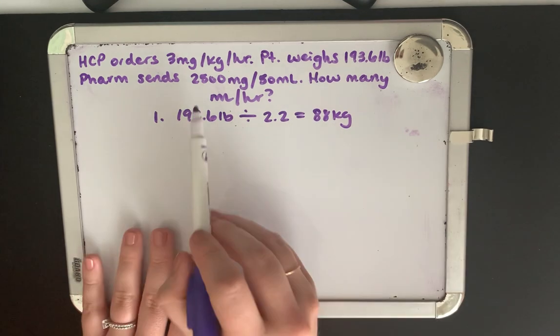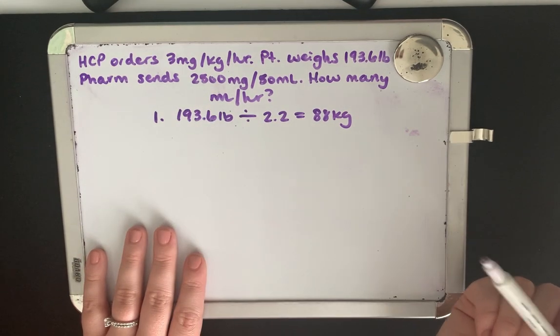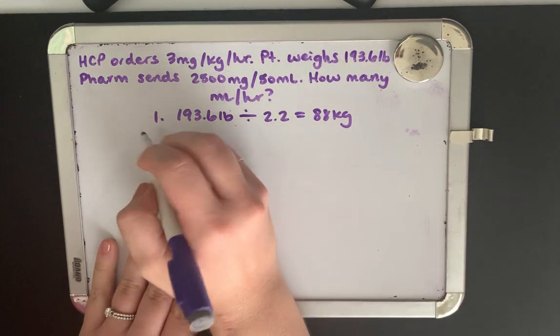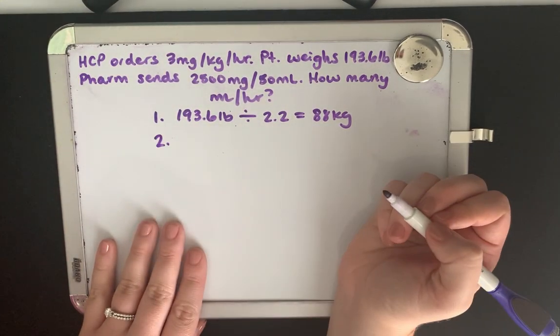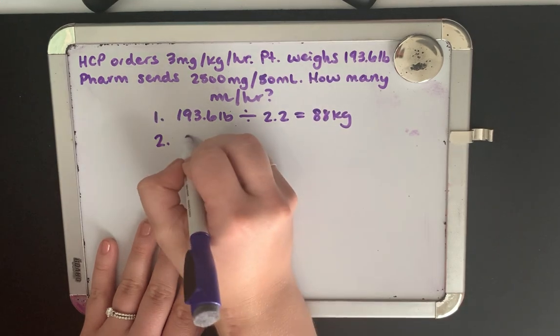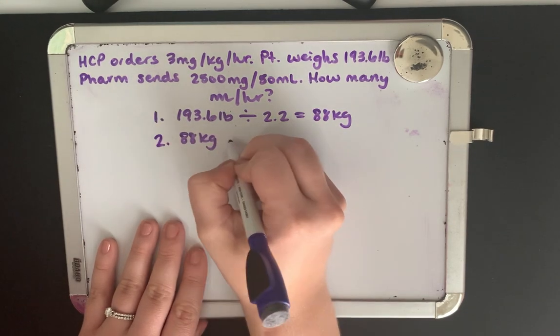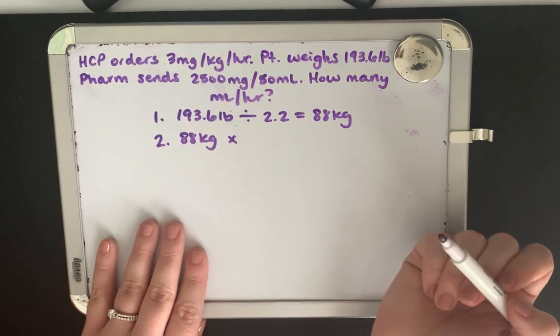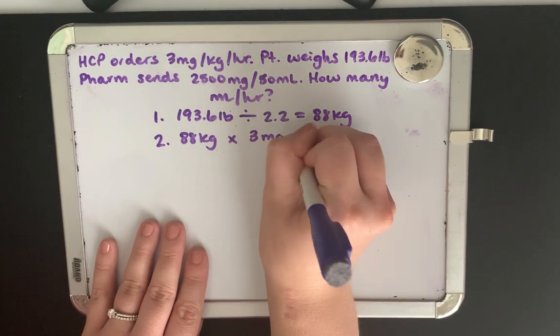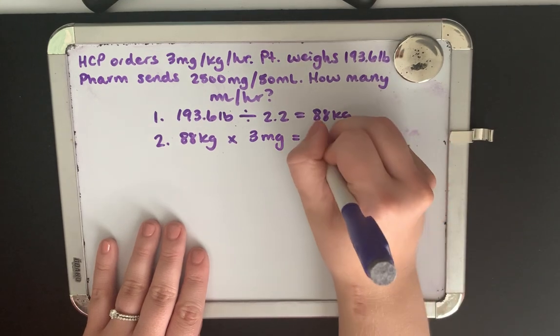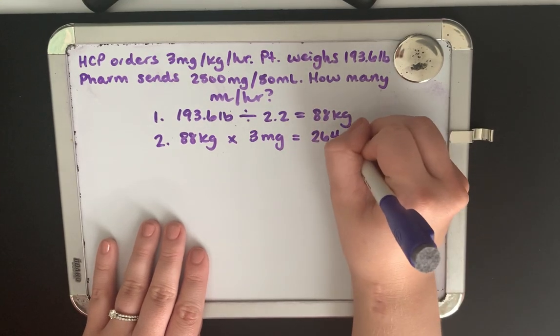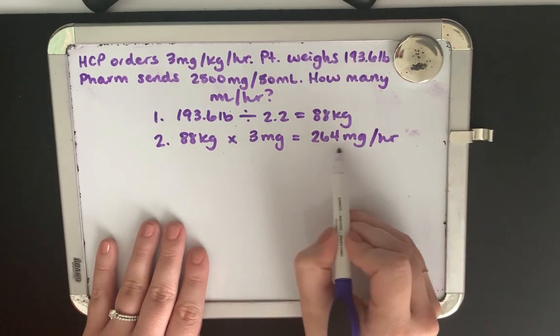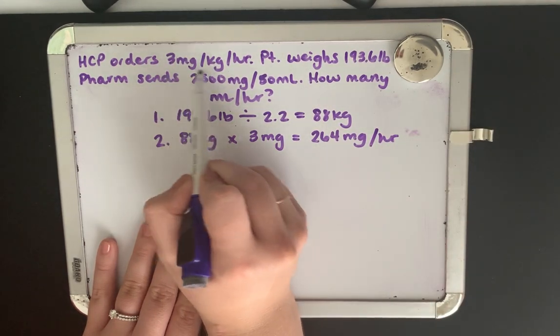Now our order is for three milligrams per kilogram. So we need to figure out how many milligrams our patient needs. So in step two, we're going to take our 88 kilos, multiplied by our dose, because we need three milligrams for every kilogram. So multiplied by three. And we wind up with 264 milligrams. And this is per hour, because this 264 is going to be this three milligrams per kilogram.